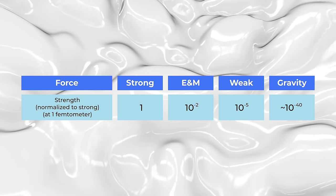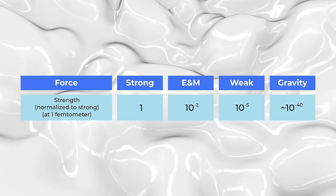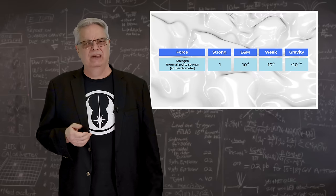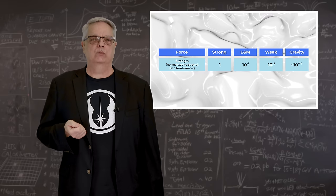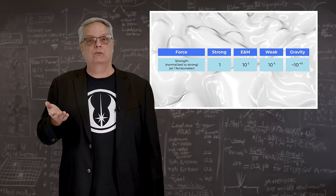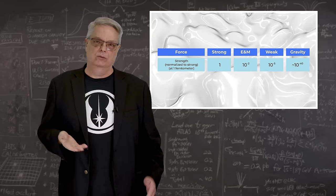For the list of strengths I mentioned earlier, the distance that was chosen is about 10 to the minus 15 meters, or a femtometer. That's about the size of a proton, which is of course super, super small. But it's the size at which particle physics experiments are done, so it makes sense.